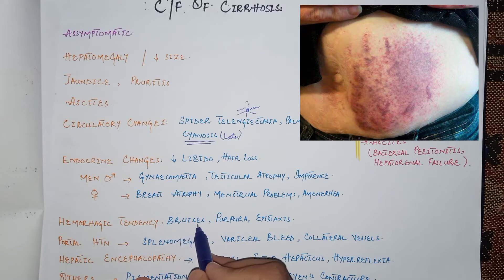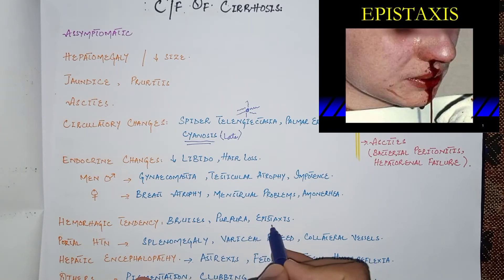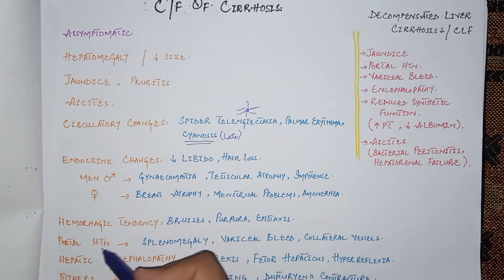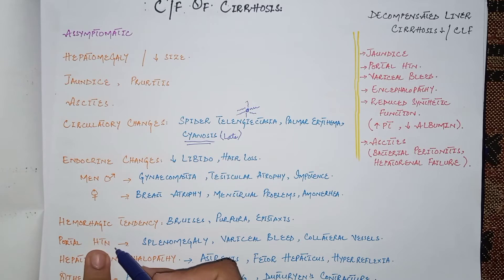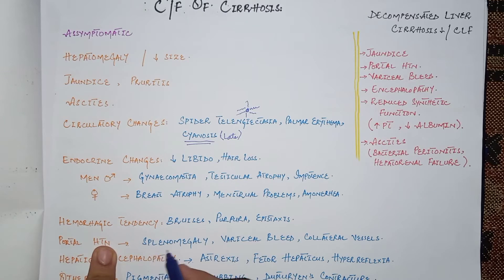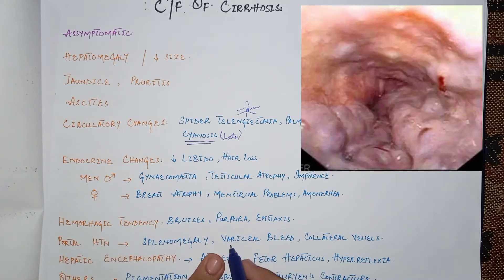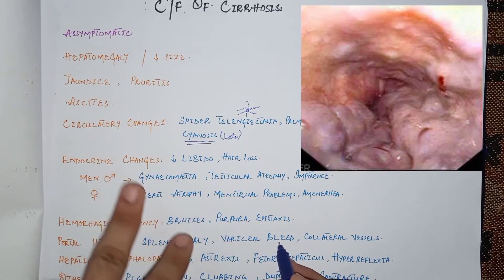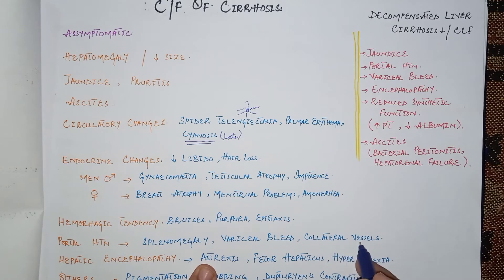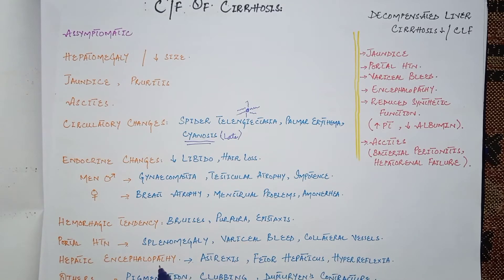There is an increased tendency to hemorrhage in cirrhotic patients, who may present with bruises, purpura, and epistaxis (bleeding from the nose). Portal hypertension is a complication of advanced cirrhosis; increased portal vein pressure causes backward pressure into the splenic vein, leading to splenomegaly. Esophageal varices may also form, which can bleed severely in advanced stages.